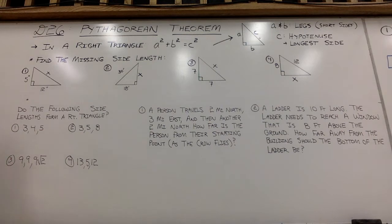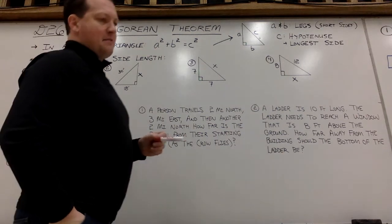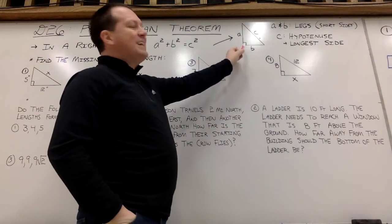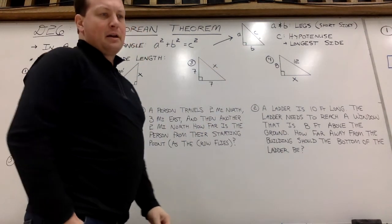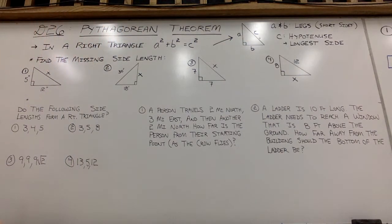So Pythagorean Theorem, we are going to be focusing in on right triangles today. Right triangles have a single 90 degree angle, and that will always be the largest angle within that triangle.